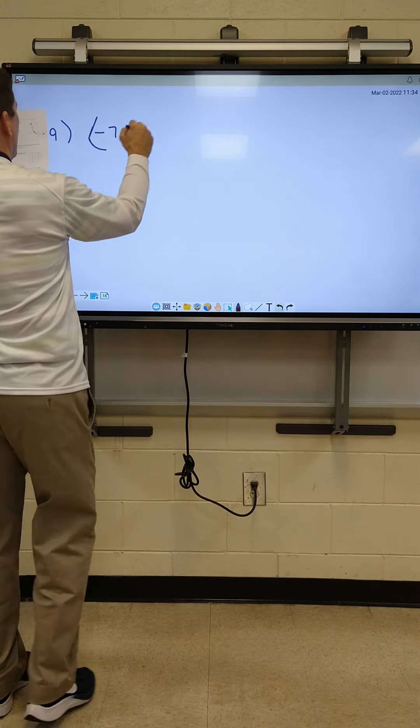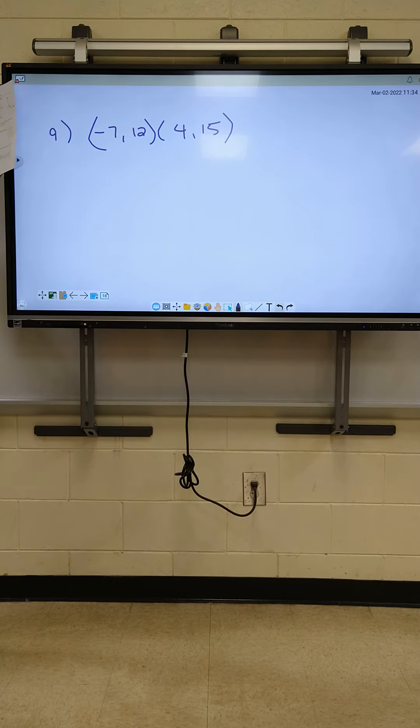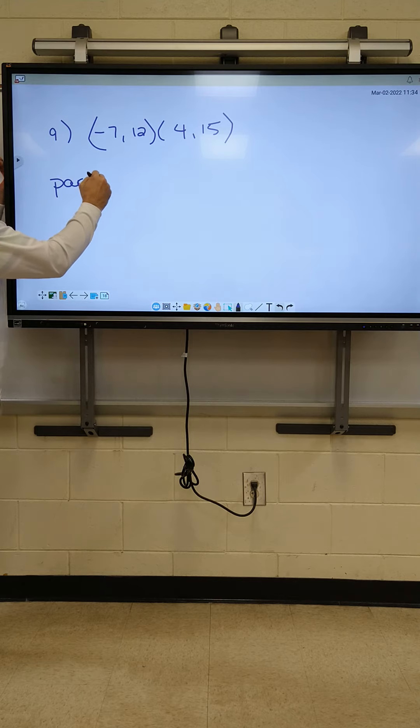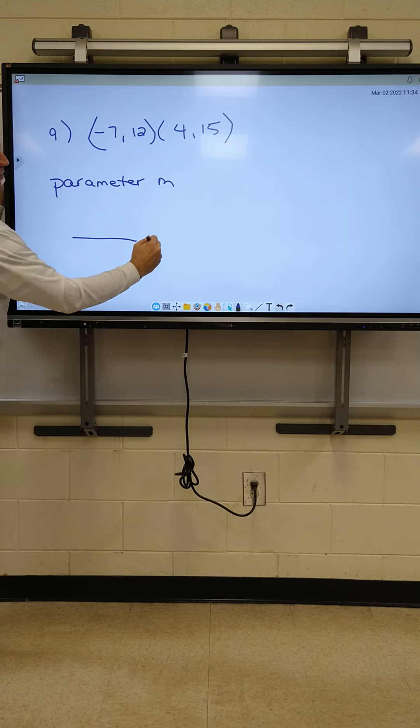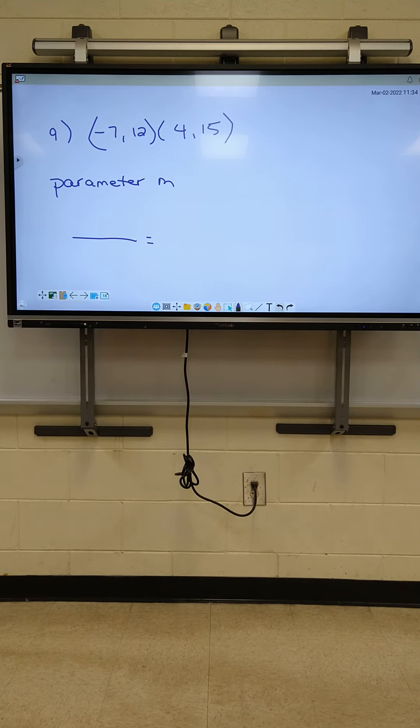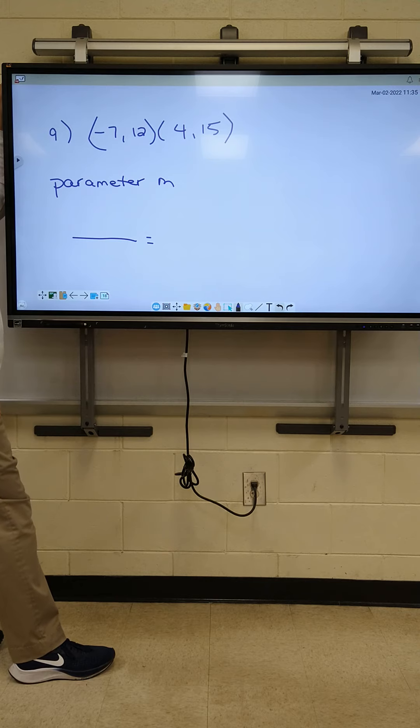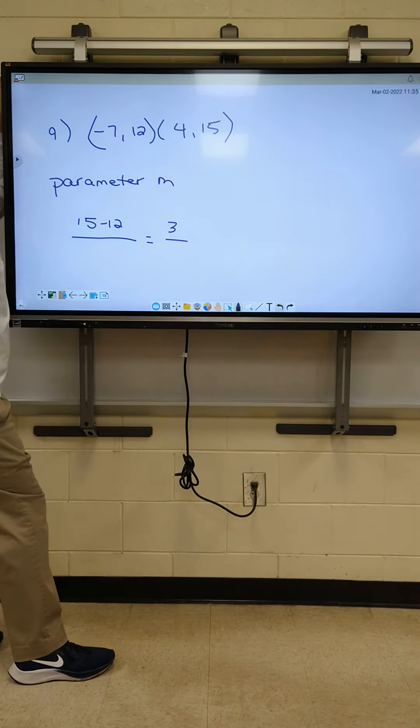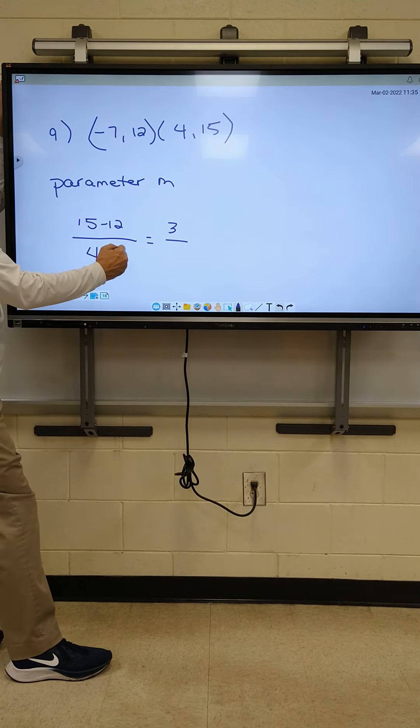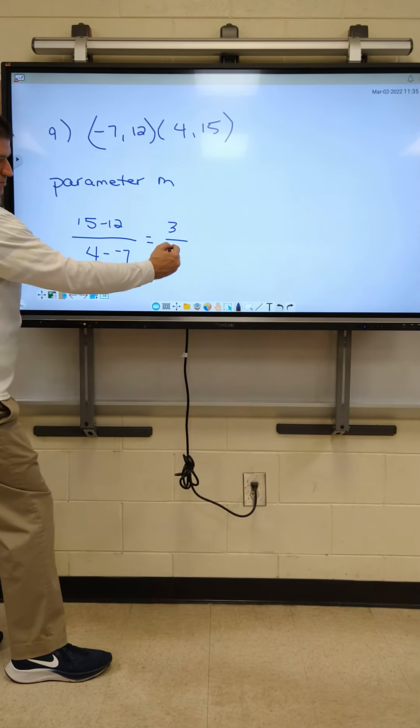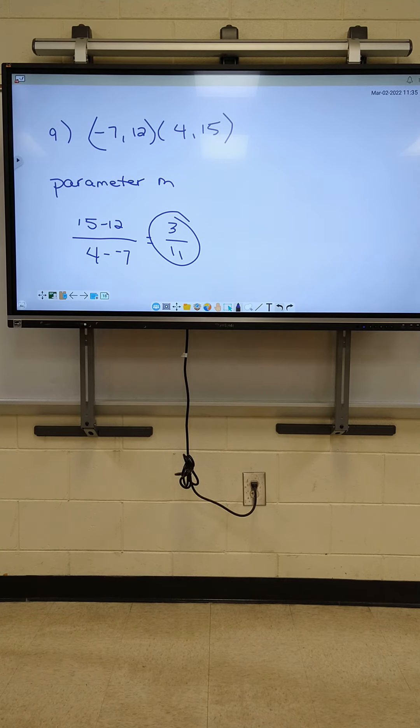All right. Let's go to nine. Number nine. Negative seven and twelve, four and fifteen. Allison, what does it mean on number nine when it says find parameter m? Find the slope. So, you guys find the slope on that one and get an answer. Do it by yourself. We've done this all week. Nobody should miss this one on the test. I really think this is going to be pretty easy. All right, Brandon, what goes on top when I'm finding my slope? Fifteen minus twelve. Fifteen minus twelve. The top is three. All right, Brandon, do the bottom. Four minus eight is negative four. Somebody type that in your calculator. Positive three over negative four.